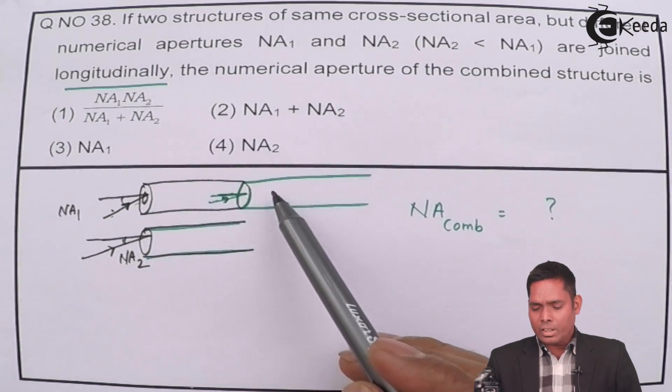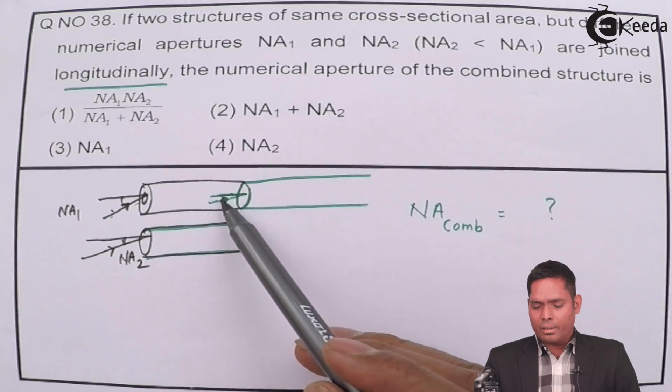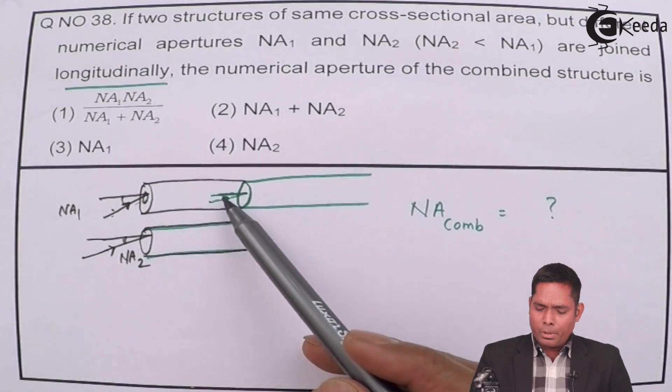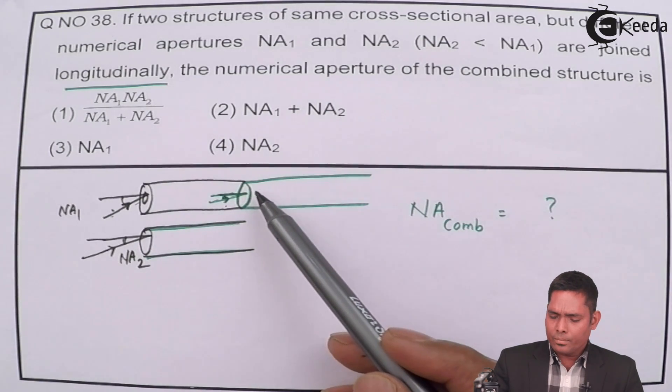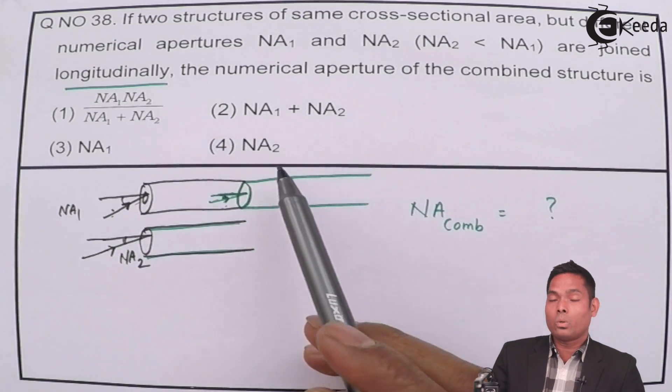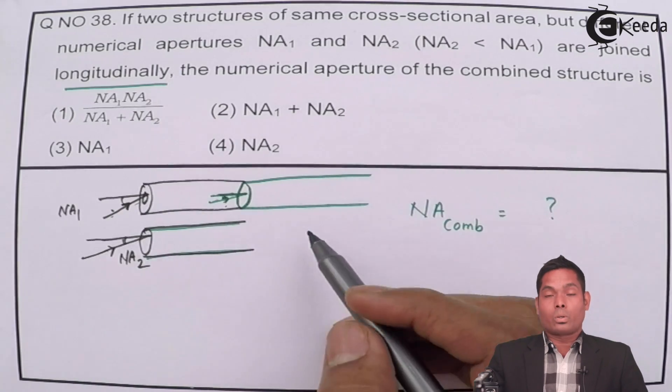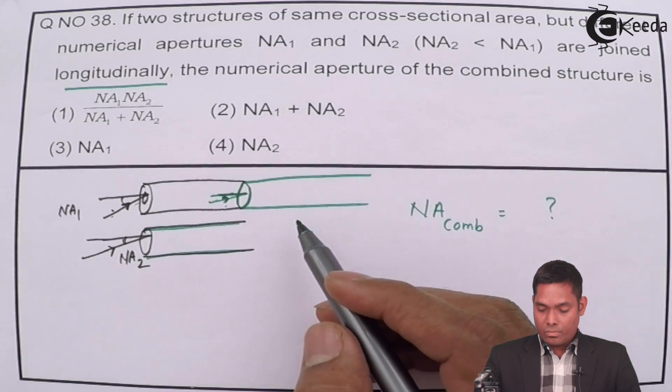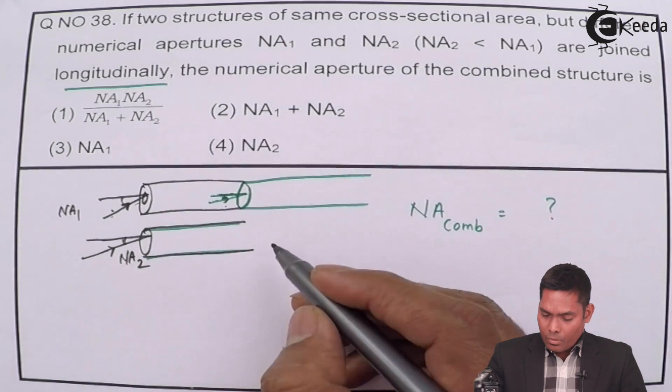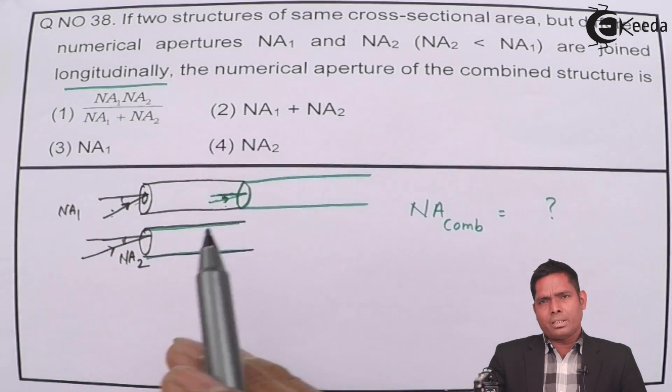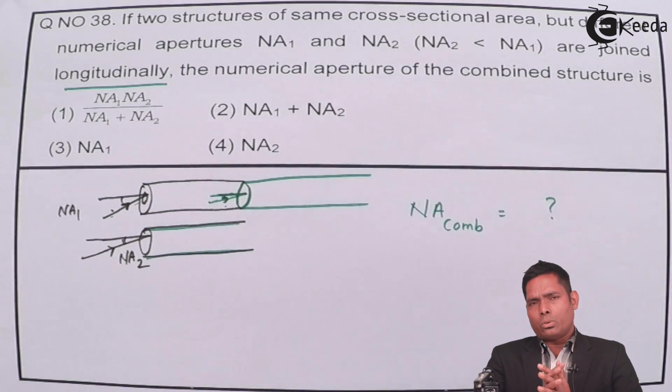And the second one, this is the angle, it's the maximum angle. Because if it is more than that, then there will be no total internal reflections. So basically the difference is that the question is that, suppose in simple terms I just explain to you.